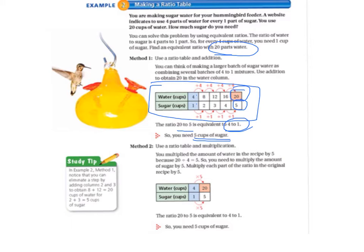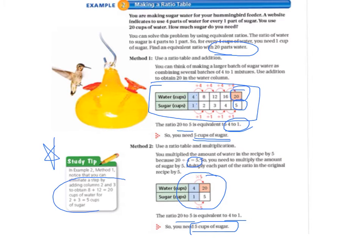Method 2 uses a ratio table and multiplication. We multiply the amount of water in the recipe by 5 because 20 divided by 4 equals 5, so we also multiply the amount of sugar by 5. Multiply each part of the original ratio by 5, and the ratio 20 to 5 is equivalent to 4 to 1, so we need 5 cups of sugar. The study tip notes that in Method 1 you can eliminate a step by adding columns 2 and 3: 8 plus 12 equals 20 cups of water for 2 plus 3 equals 5 cups of sugar.